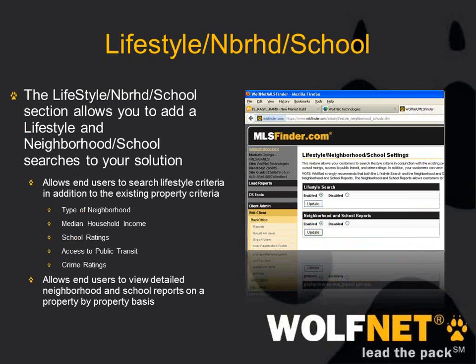The lifestyle, neighborhood, and school section is a newer section. Basically, the only options are enabling or disabling them. Once enabled, these sorts of searches will appear on your IDX — I believe it's available in all markets that we service. Enabling those will give users the ability to search lifestyle criteria along with the normal IDX criteria, such as single-family homes greater than $300,000 but in an area with good schools. That's enabled and disabled in the lifestyle, neighborhood, and school settings area.